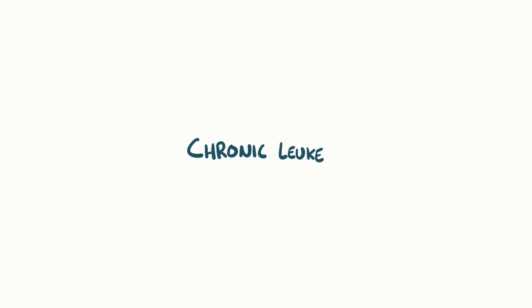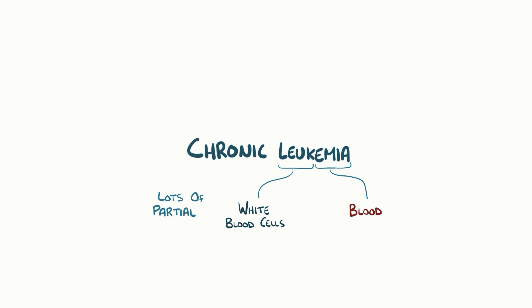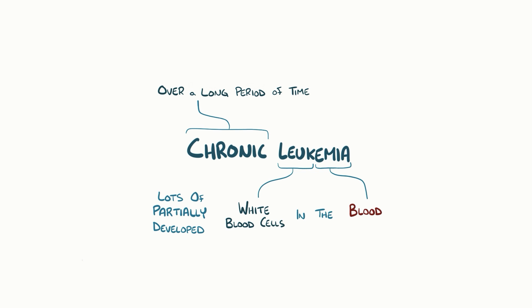With chronic leukemia, 'leuk' refers to white blood cells and 'emia' refers to the blood. So in chronic leukemia, there are lots of partially developed white blood cells in the blood over a long period of time. These partially developed white blood cells interfere with the development and function of healthy white blood cells, platelets, and red blood cells.